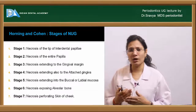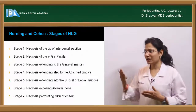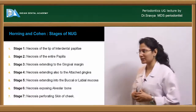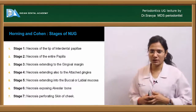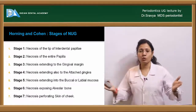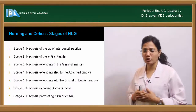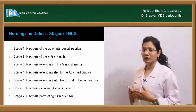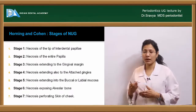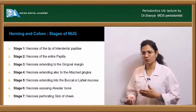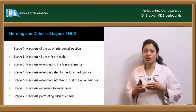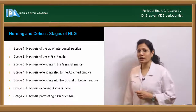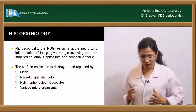Horning and Cohen described seven stages of NUG: Stage 1 — necrosis of the tip of interdental papilla; Stage 2 — entire papilla involved; Stage 3 — marginal gingiva; Stage 4 — attached gingiva; Stage 5 — buccal/lingual or labial mucosa; Stage 6 — exposure and necrosis extending to alveolar bone; Stage 7 — necrosis spreads to skin, potentially perforating the cheek, turning into noma or necrotizing stomatitis.